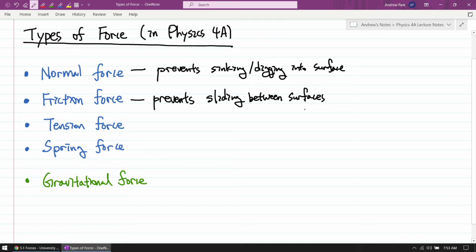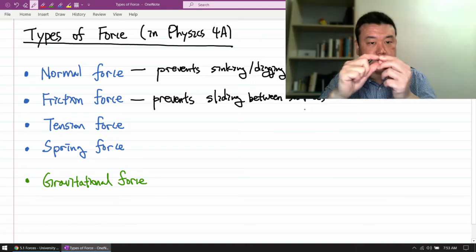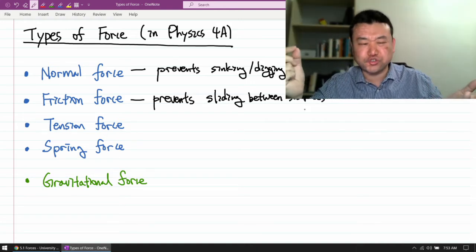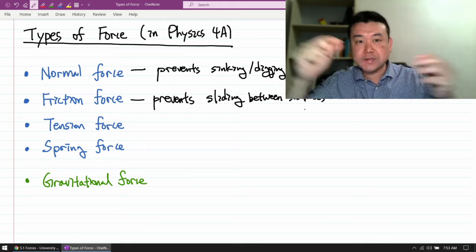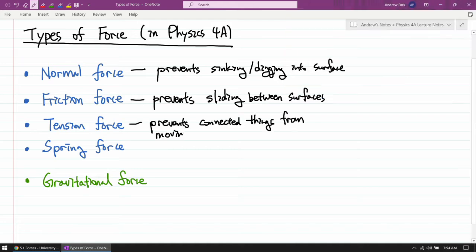The thing about friction force is it can be complicated, but it boils down to it prevents sliding between surfaces. Tension force, which only acts when two things are connected by a flexible connector or string, it prevents two things from getting farther away, moving farther away.